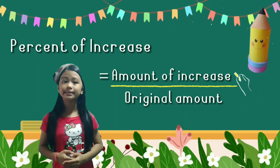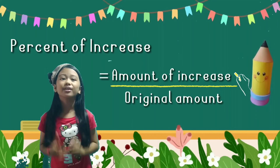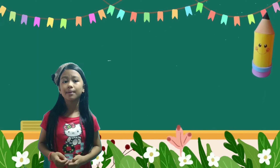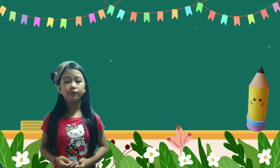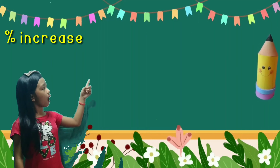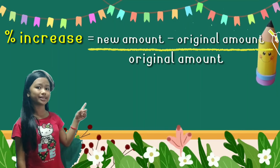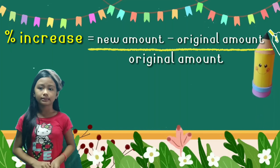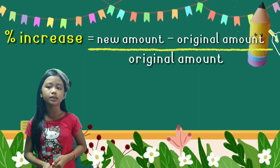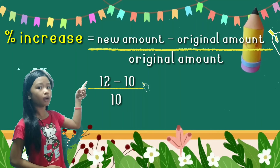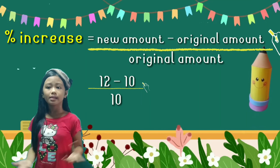Do you have any idea? Wonderful! You are right! To get the amount of increase, we need to subtract the original amount from the new amount. This will give us a new formula, which is: percent of increase equals new amount minus original amount, over original amount. Now, let us substitute the given — the new amount or new price of a notebook is 12 minus 10 over 10.